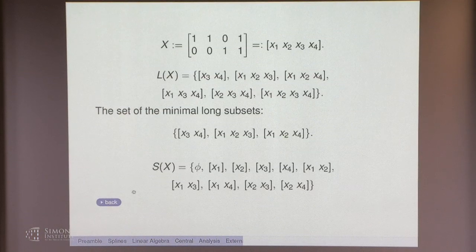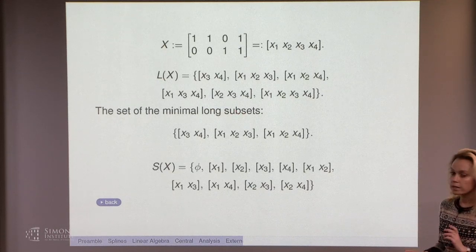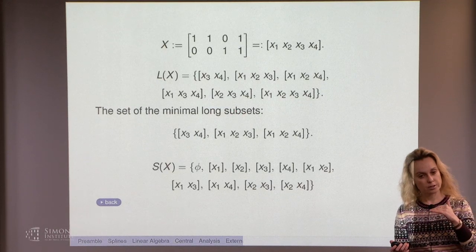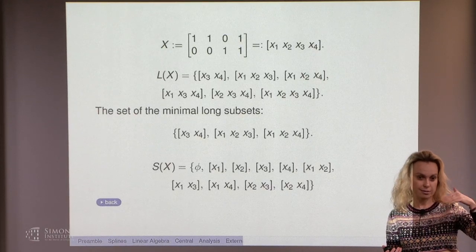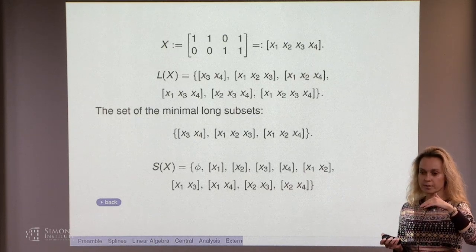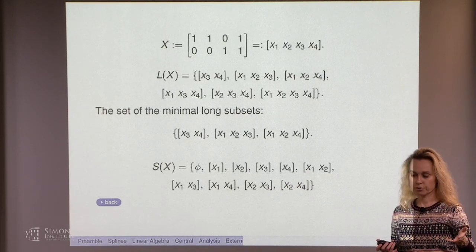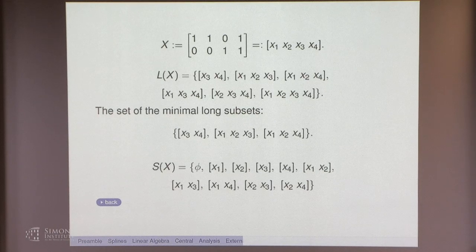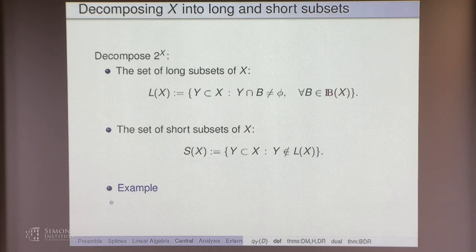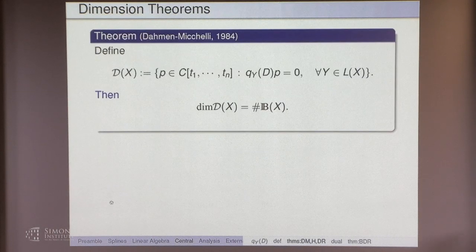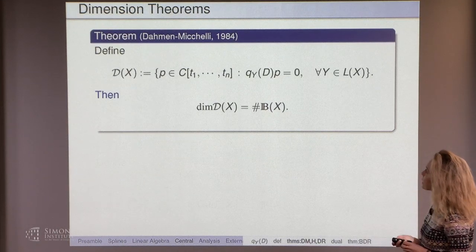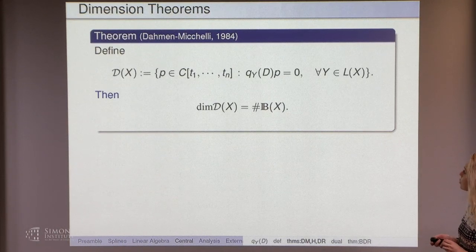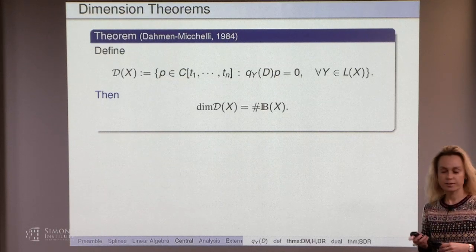Here, continuing with our baby example, is the full splitting into long and short. You can notice that the collection of long subsets is closed under taking supersets as it should be, and the collection of short subsets is closed under taking subsets as it should be. So no surprises here. Here comes the early result proven by Daman and Michelli historically — the first result which connected splines with all this business.